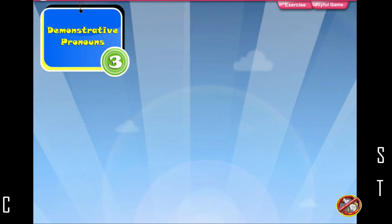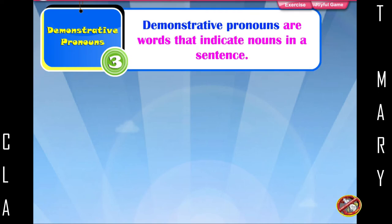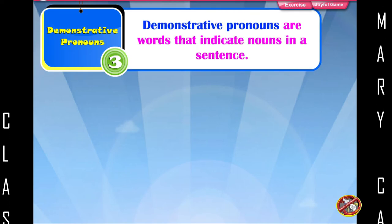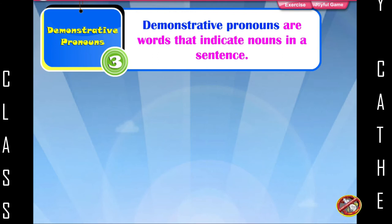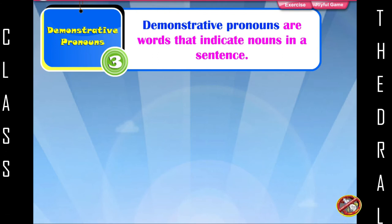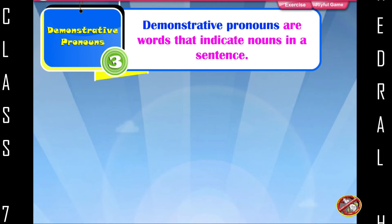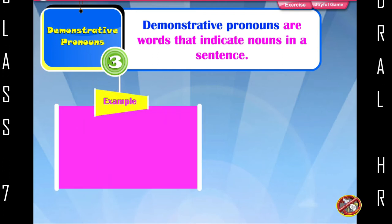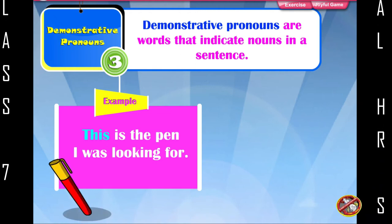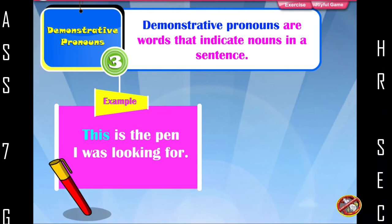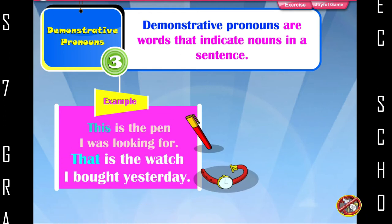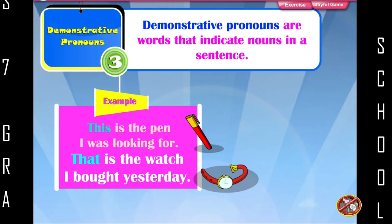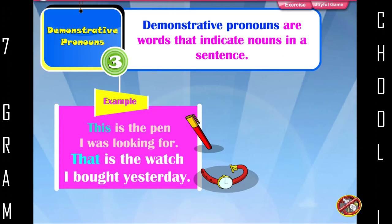Demonstrative pronouns are words that indicate nouns in a sentence. Examples: This is the pen I was looking for. That is the watch I bought yesterday.